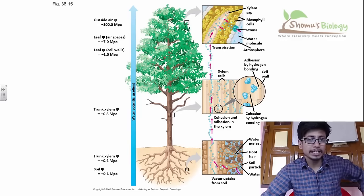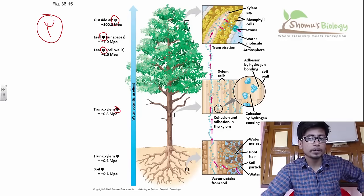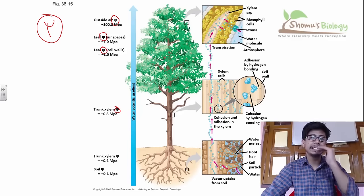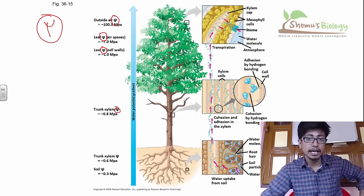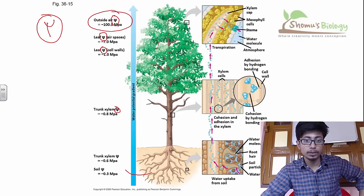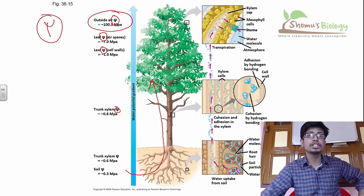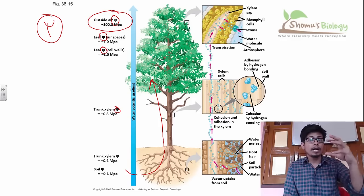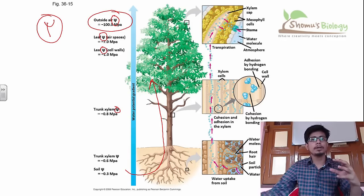Looking at the values on the diagram, we call it psi (ψ), known as water potential. Water potential varies for different reasons across different regions of the plant tissue. For example, the water potential is very negative at the leaf, and as a result it creates pressure that forces water to move up. Water will flow from higher potential to lower potential. The water potential at the root is minus 0.03, while the water potential at the plant leaf is minus 100.